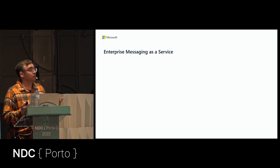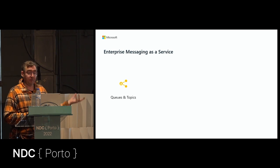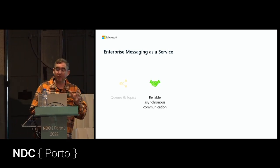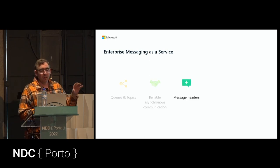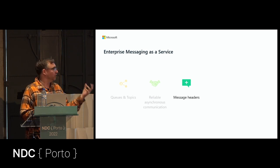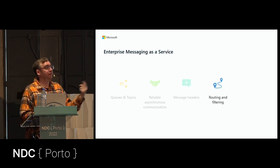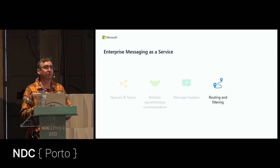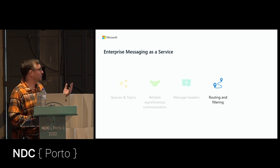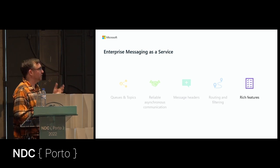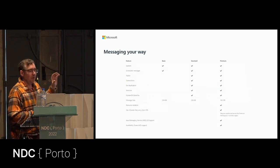Service Bus is enterprise messaging as a service. We have both queues and topics supporting publish/subscribe with filtering and routing. It's really reliable — your messages will never be lost. You can add message headers, which storage queues do not support. For example, you might have two warehouses — one in North America, one in the EU — and you want messages routed to the right warehouse. We have rich features like poison message handling, dead-lettering, and VNet integration.